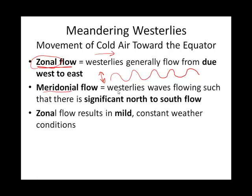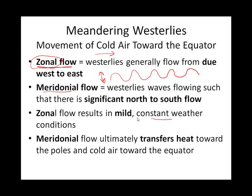If the air aloft is zonal — not much wiggle — basically the weather you have is the weather you're going to keep. Compare that to if you have a fair bit of wiggle in your upper winds — meridional flow. What that's going to do is bring cold air down in one segment and bring warm air up in another. If cold and warm air meet or clash, a lot of times that's when you're going to get severe weather or at least some sort of precipitation.